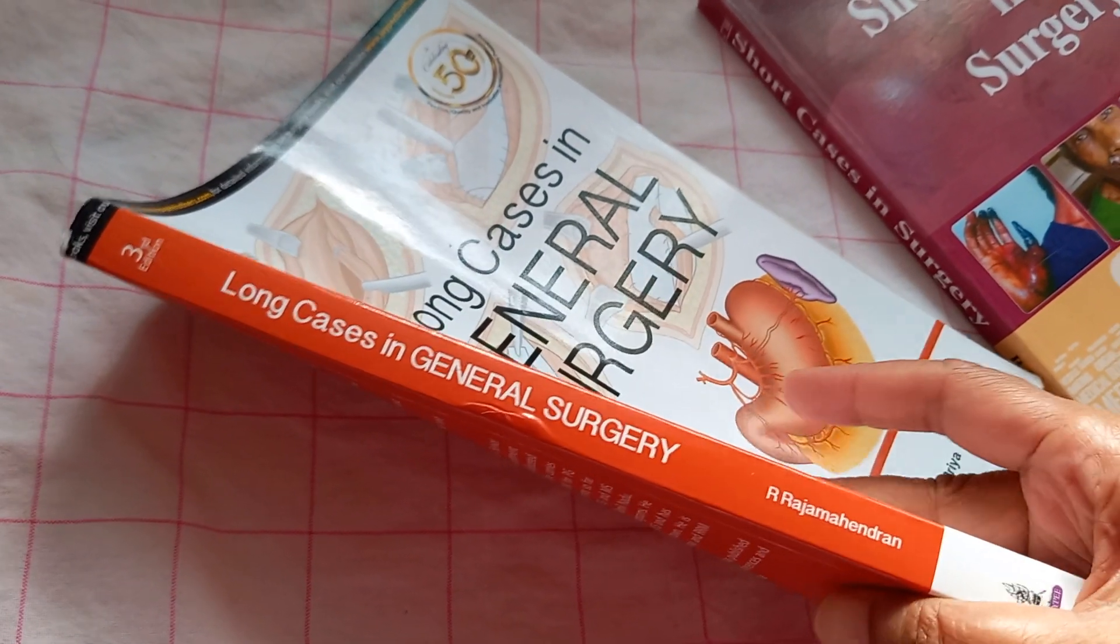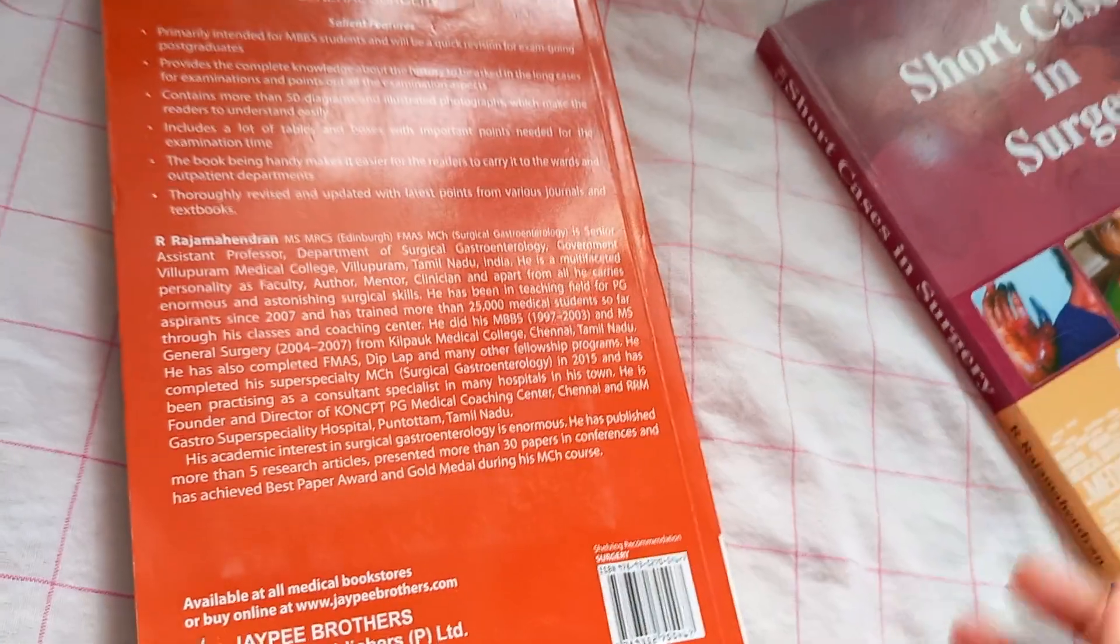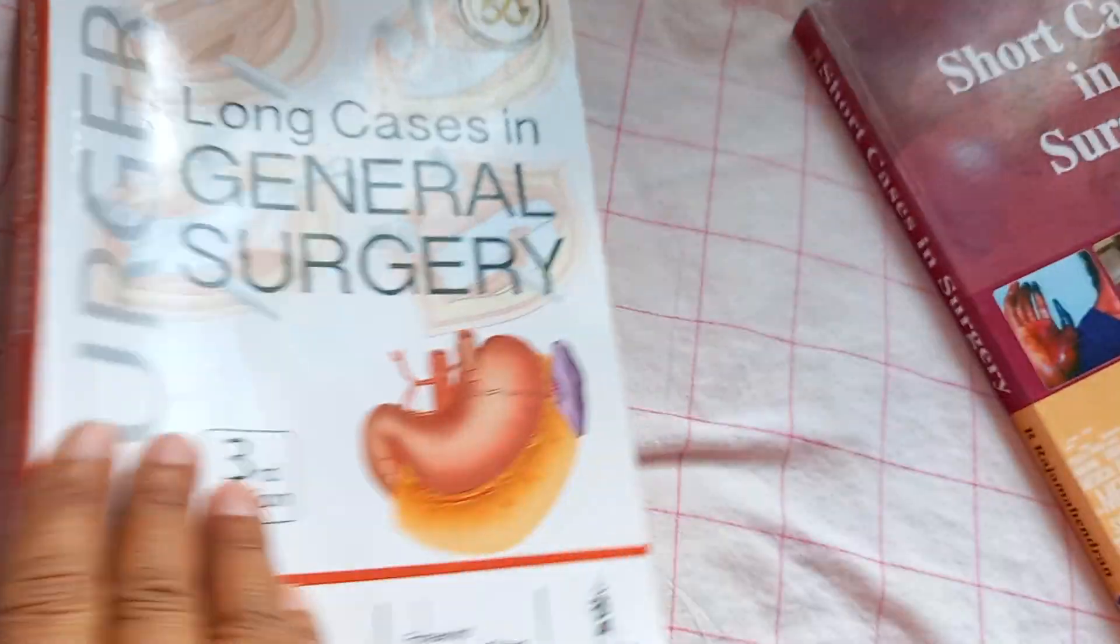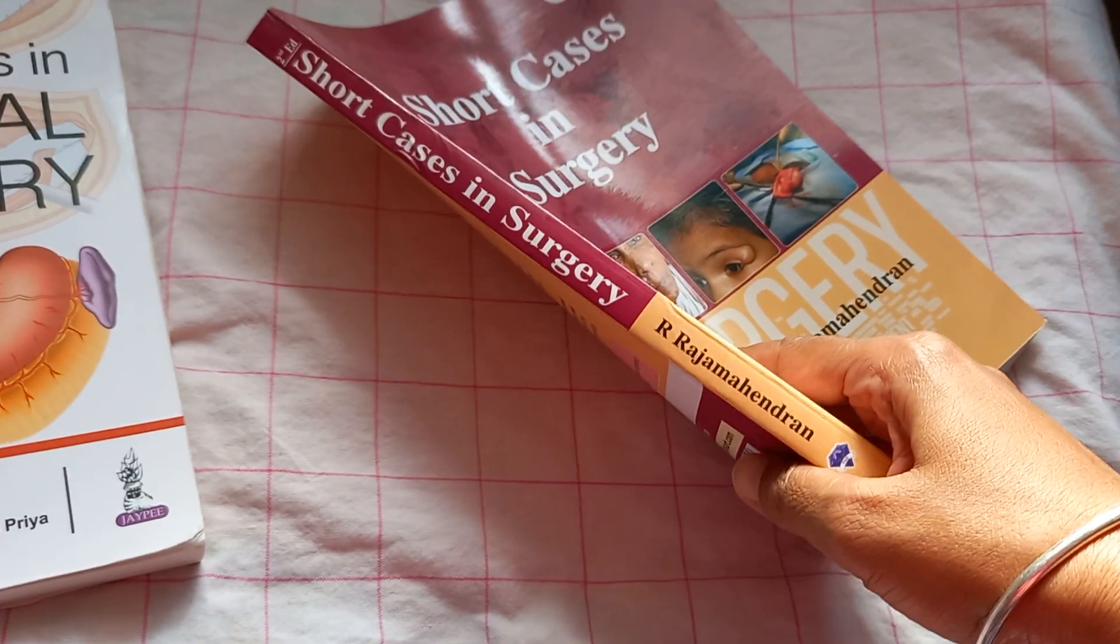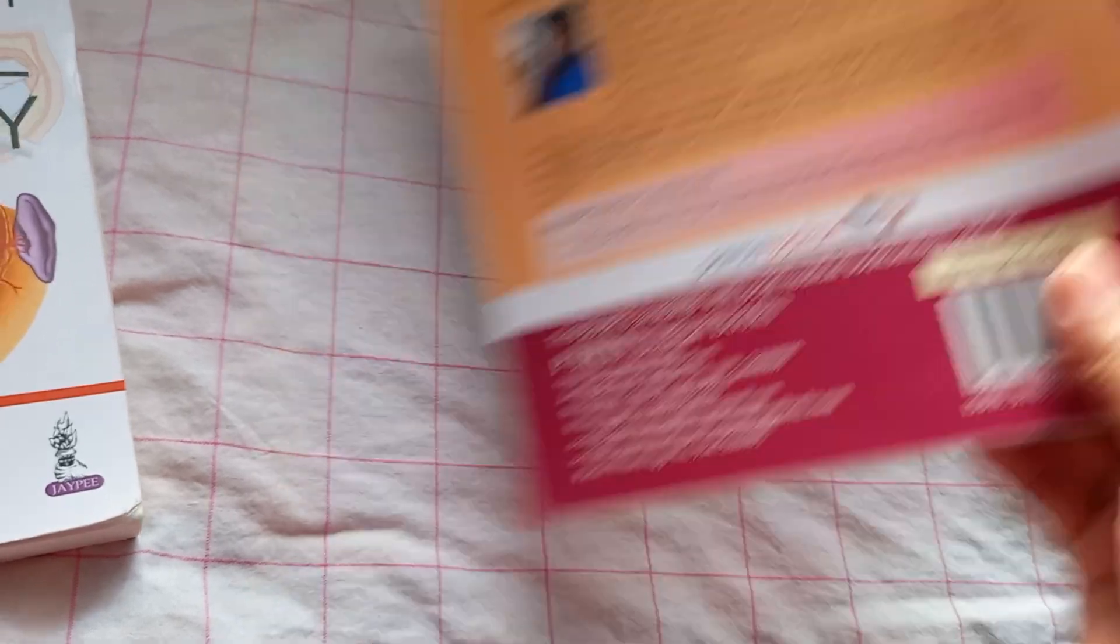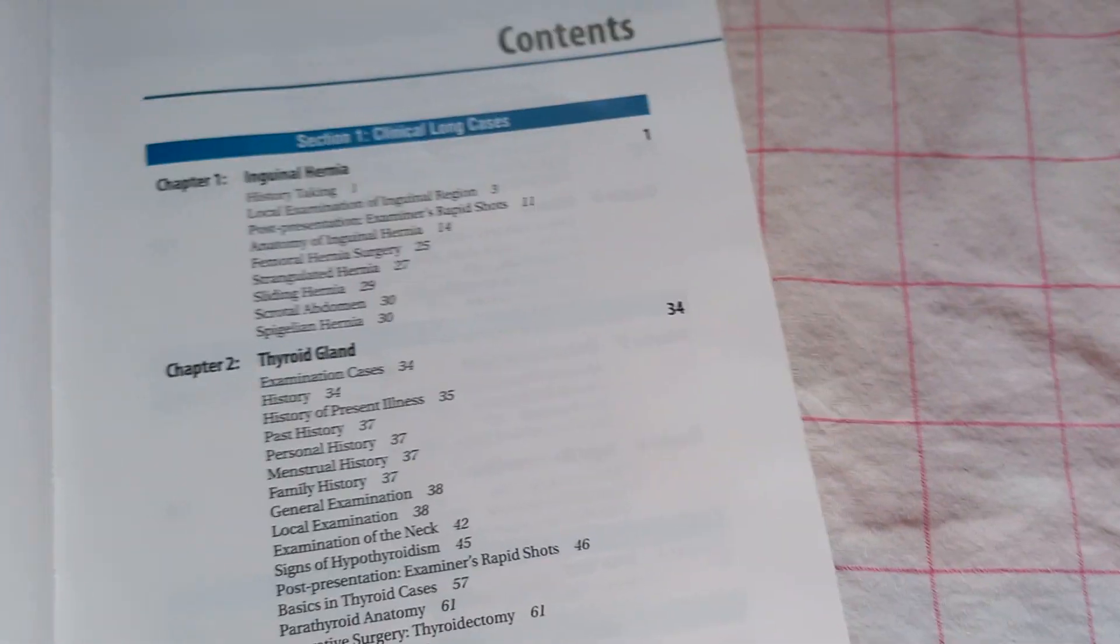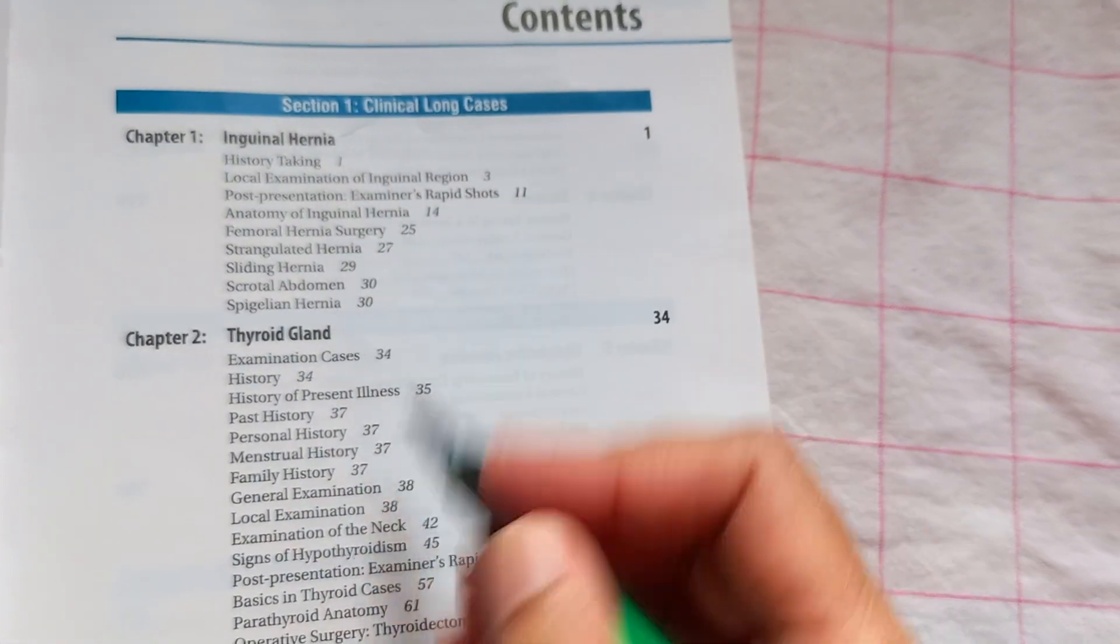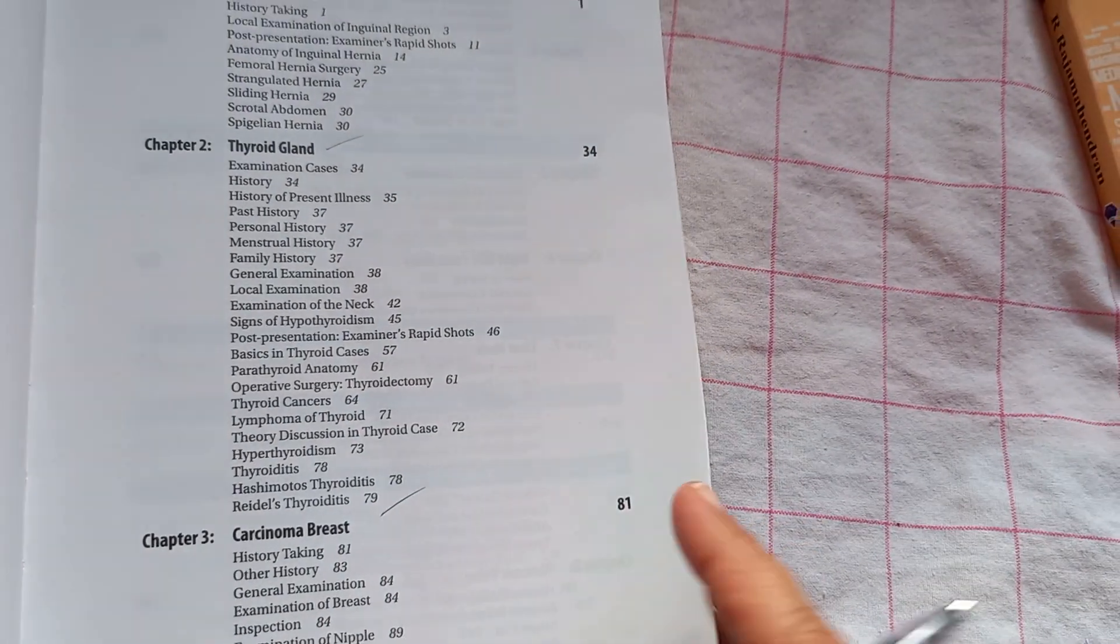Look at the book. So let's look at Long Cases in General Surgery. So here you have the hernia, especially inguinal hernia is important. Thyroid, very important. Then carcinoma breast case, very important.